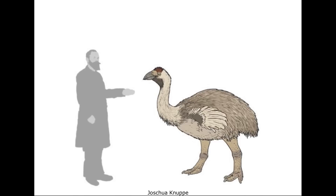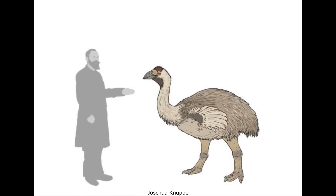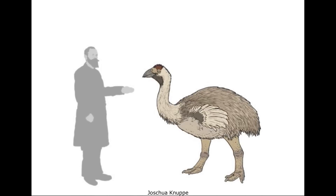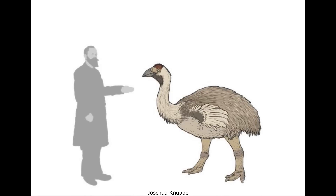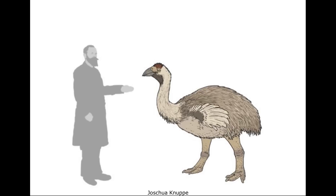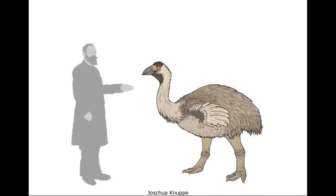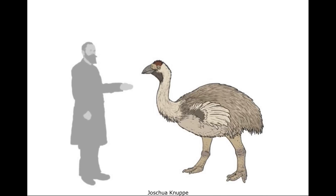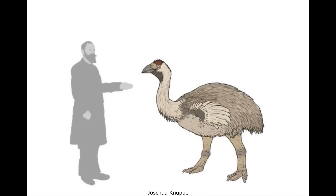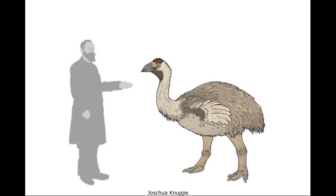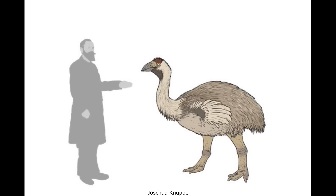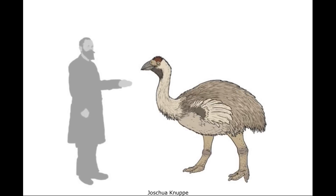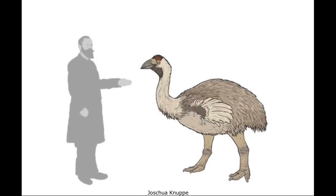Although the skull is unknown, the structure of the vertebrae suggests a long neck, which, when combined with the rest of the skeleton, indicate that this was a ratite-like flightless forager. It would not have been a fast runner, with its legs adapted for graviportal walking, similar to the extinct elephant birds of Madagascar.